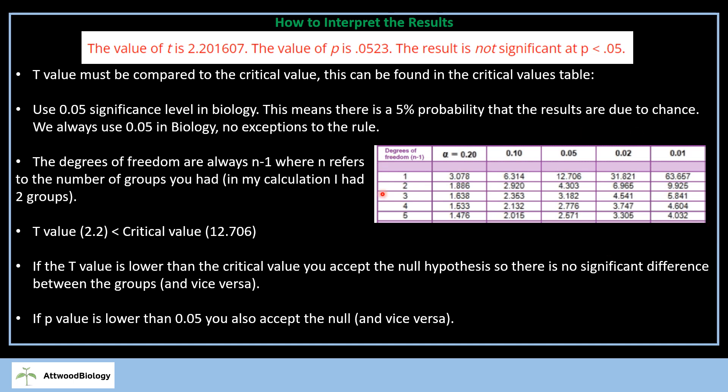So you have to state there's no significant difference between the groups, do your calculation, show that you are comparing the T-value to the critical value, show how you found the critical value in the table, and then interpret it by saying if the T-value is lower than the critical value, you accept the null hypothesis. If we're accepting the null hypothesis, then there is no significant difference between the groups and vice versa.